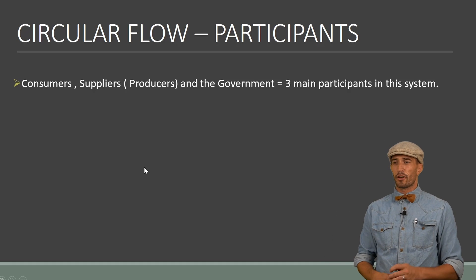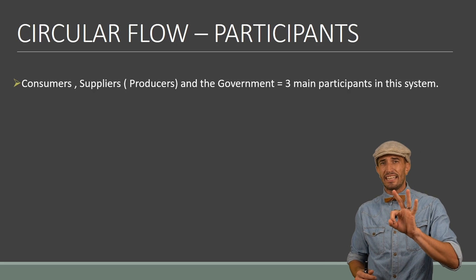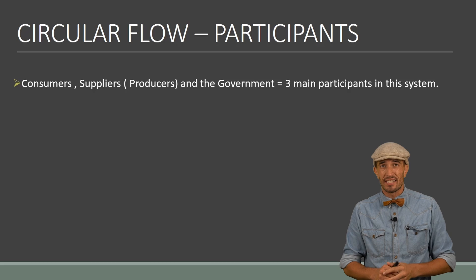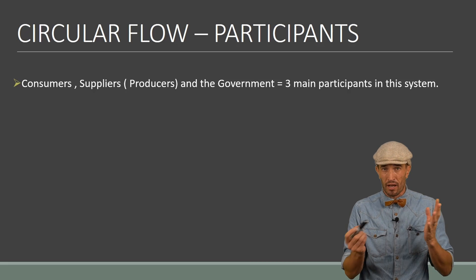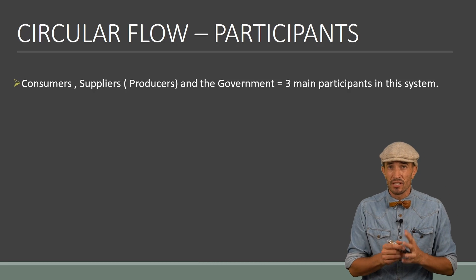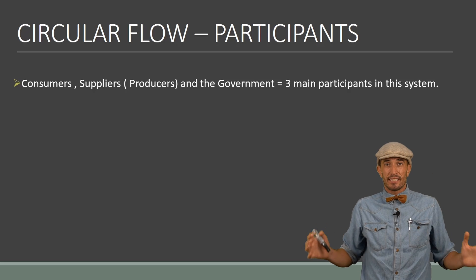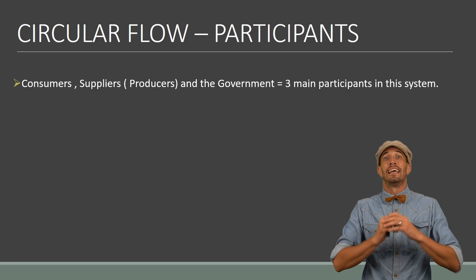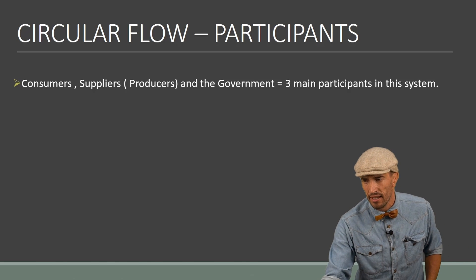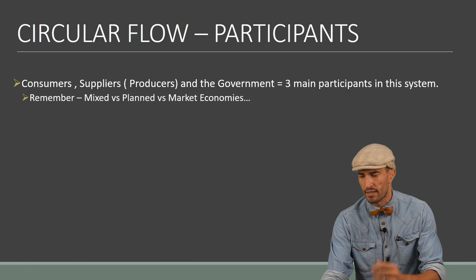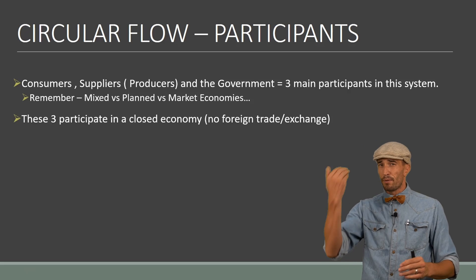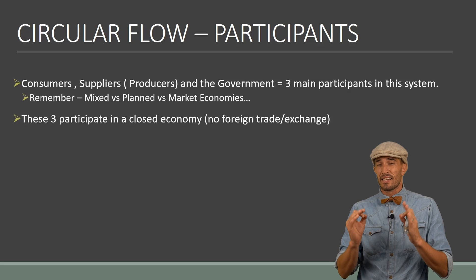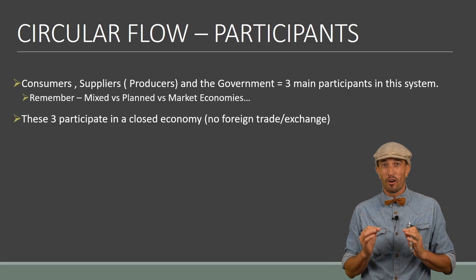The three participants in any economy are consumers, suppliers, and the government. If there are no businesses or consumers, there's nothing to trade, and we need someone to govern — the government is like the referee. We are focusing on a mixed economy here because the government is involved but doesn't totally take it over.